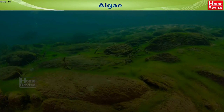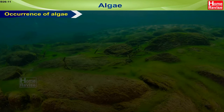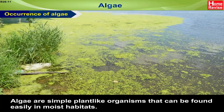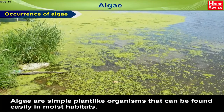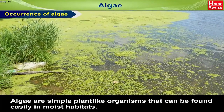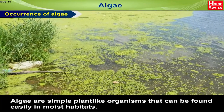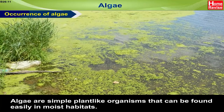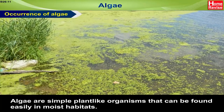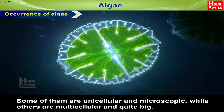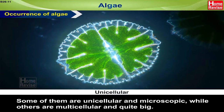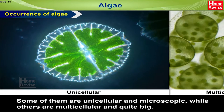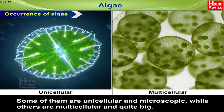Algae. Occurrence of Algae. Algae are simple, plant-like organisms that can be found easily in moist habitats. Some of them are unicellular and microscopic, while others are multicellular and quite big.